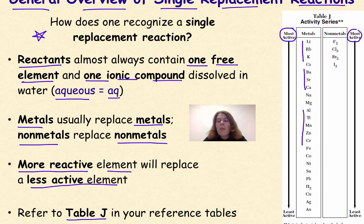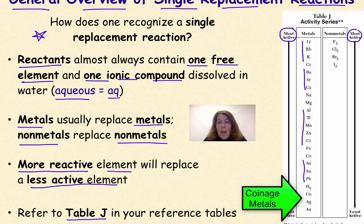And then finally some of our less active metals near the end, and then our coinage metals, which are definitely not active. Things like copper and silver and gold, things that we can actually wear and not have to worry about reactivity.